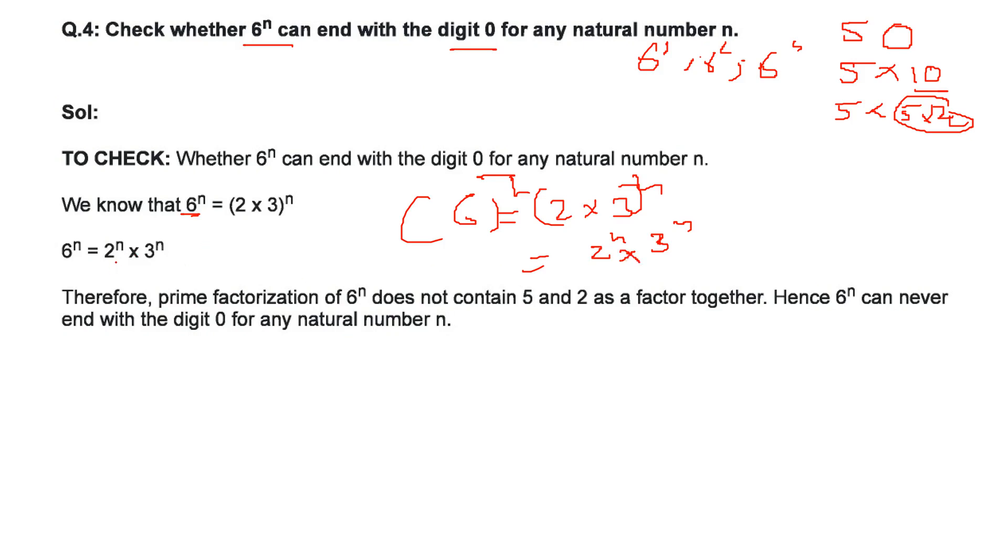You see, the prime factorization of 6 to the power n does not contain 5 and 2 factor together because we need 5 and 2 together because 5 into 2 will give you 10. So 6 to the power n can never end with a 0 for any natural number n.